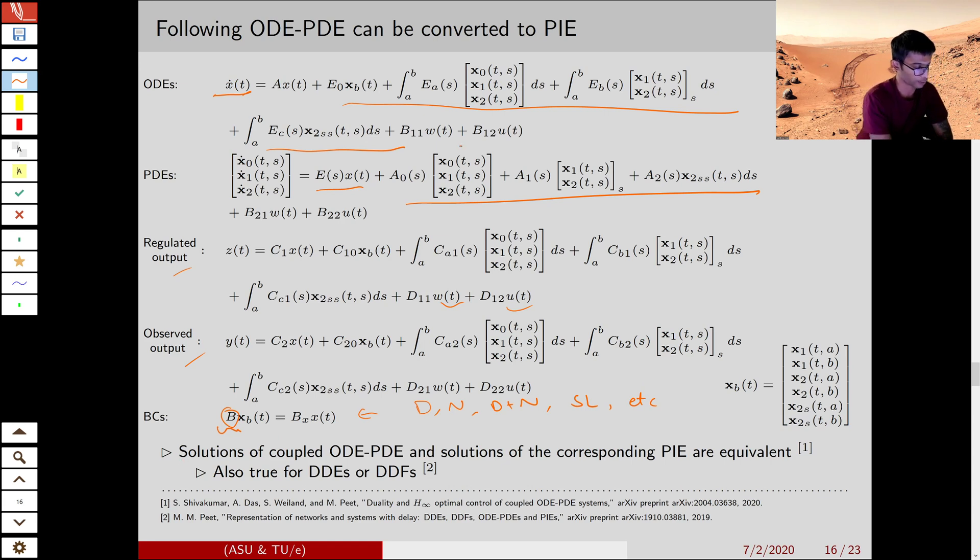When that's the case, solutions of this PIE or the PDE and the corresponding PIE form are equivalent, and they have similar properties in stability, input-output, etc.